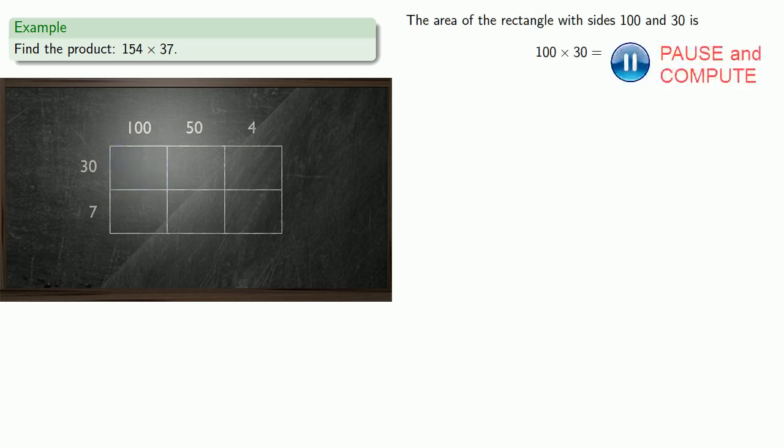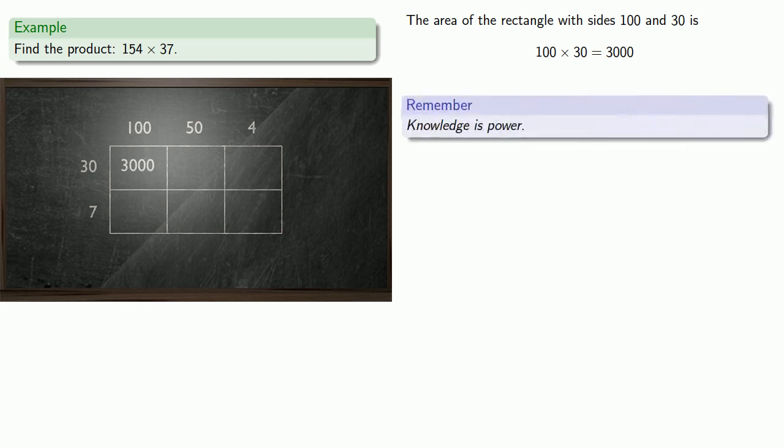So the area of the rectangle with size 100 by 30 is going to be 100 times 30. That's 3,000. Now let's stop a minute and smell the roses. Or remember, knowledge is power. In this particular case, notice that this rectangle is both longer and wider than any of the other rectangles.